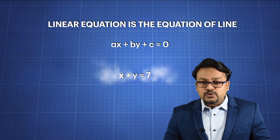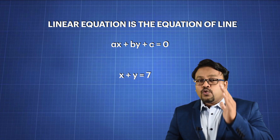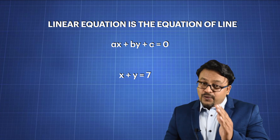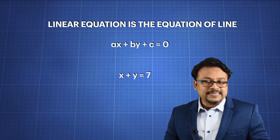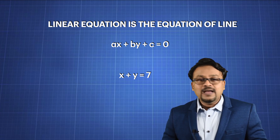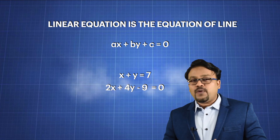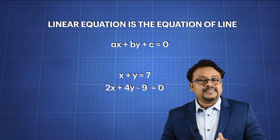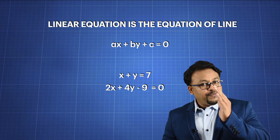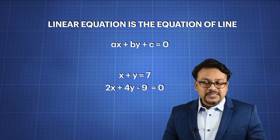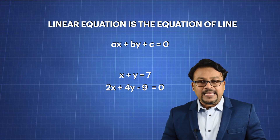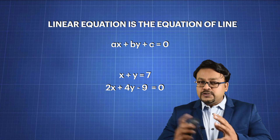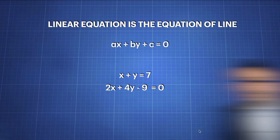So I will give you an example of a linear equation. For example, X plus Y equals to 7. Here, the coefficient of X is 1, the coefficient of Y is 1, and the constant is 7. Another one is 2X plus 4Y minus 9 equal to 0. Here, the coefficient of X is 2, the coefficient of Y is 4, and the constant is minus 9. So these were a few examples of linear equations which you have already learned.